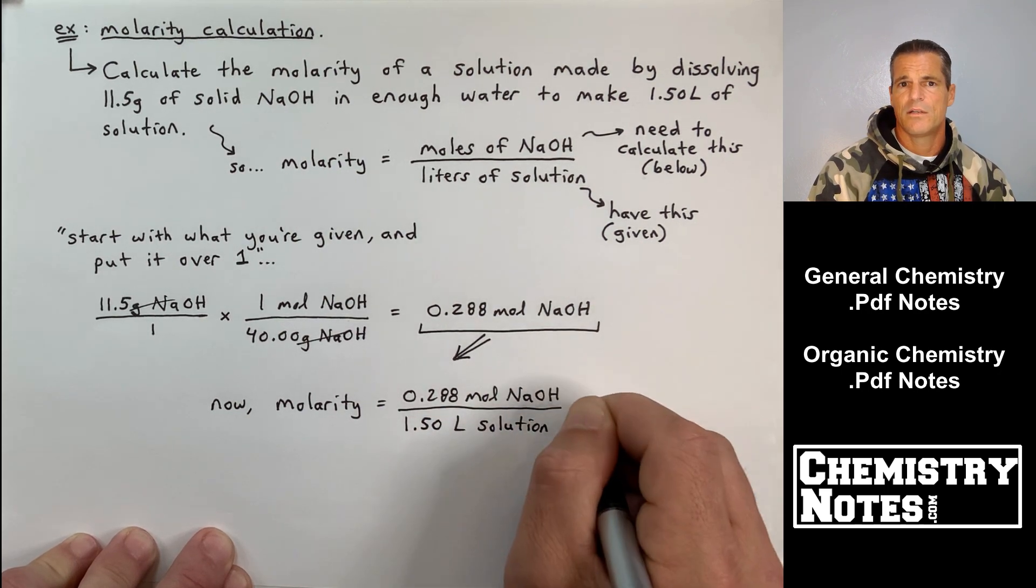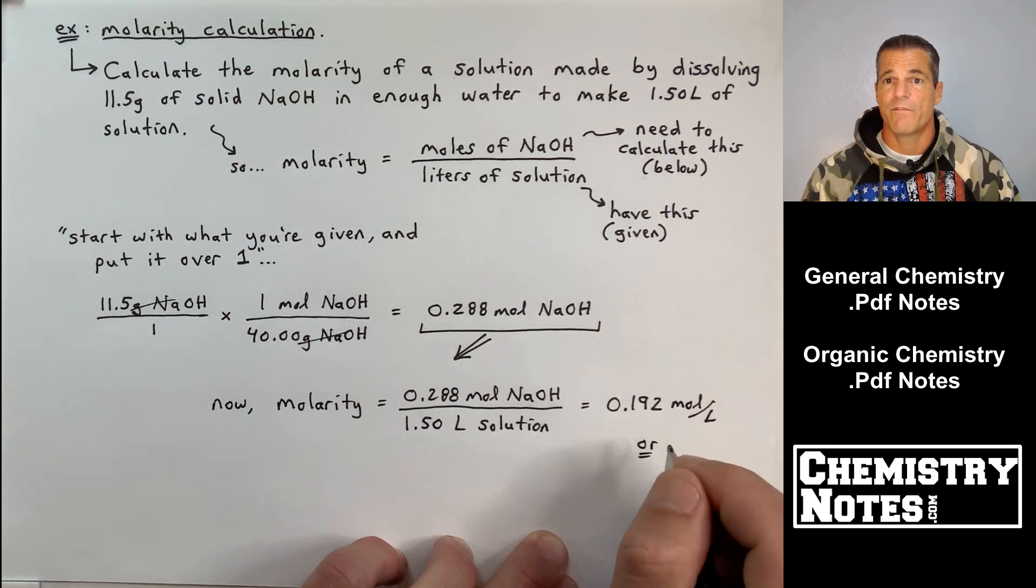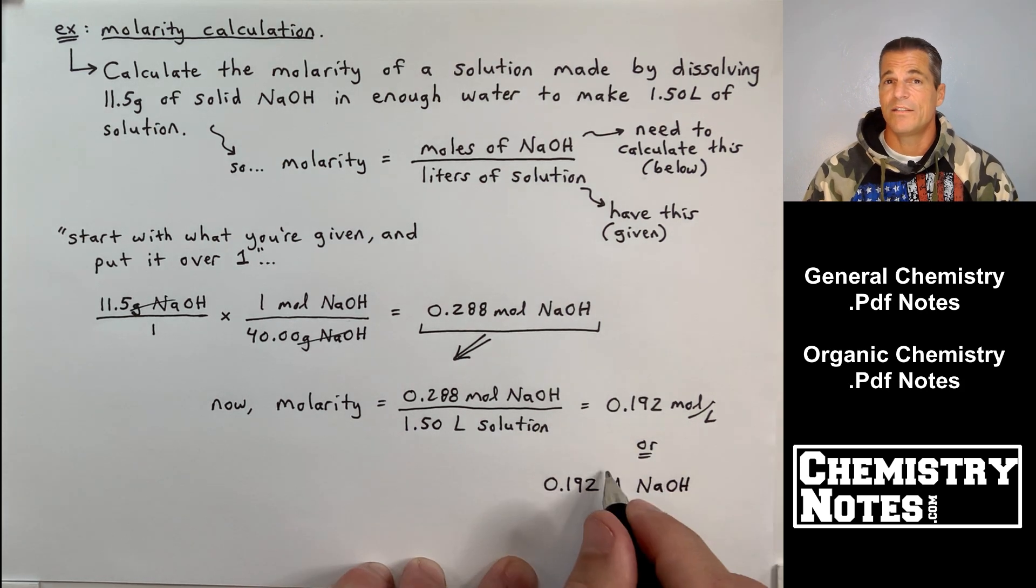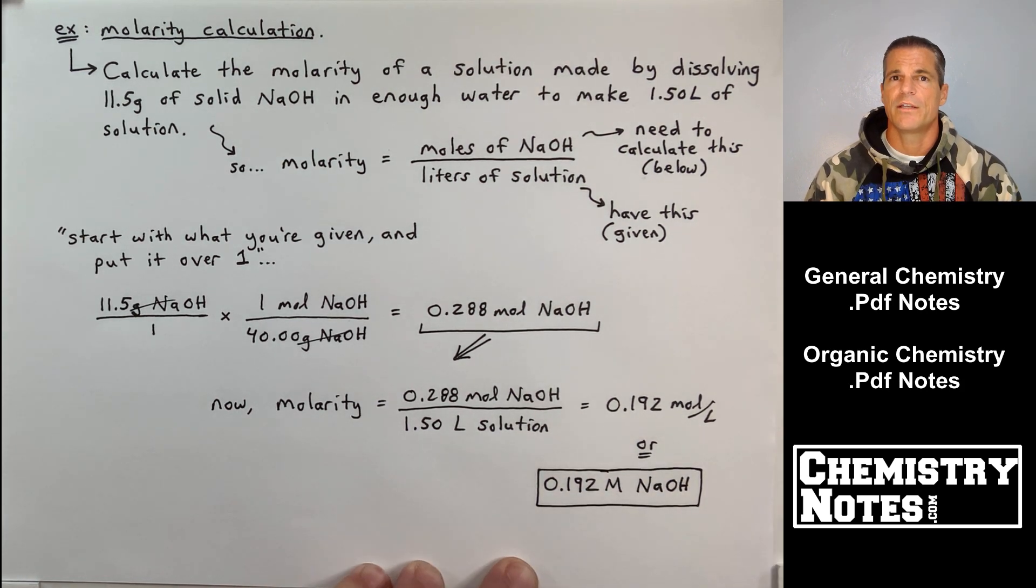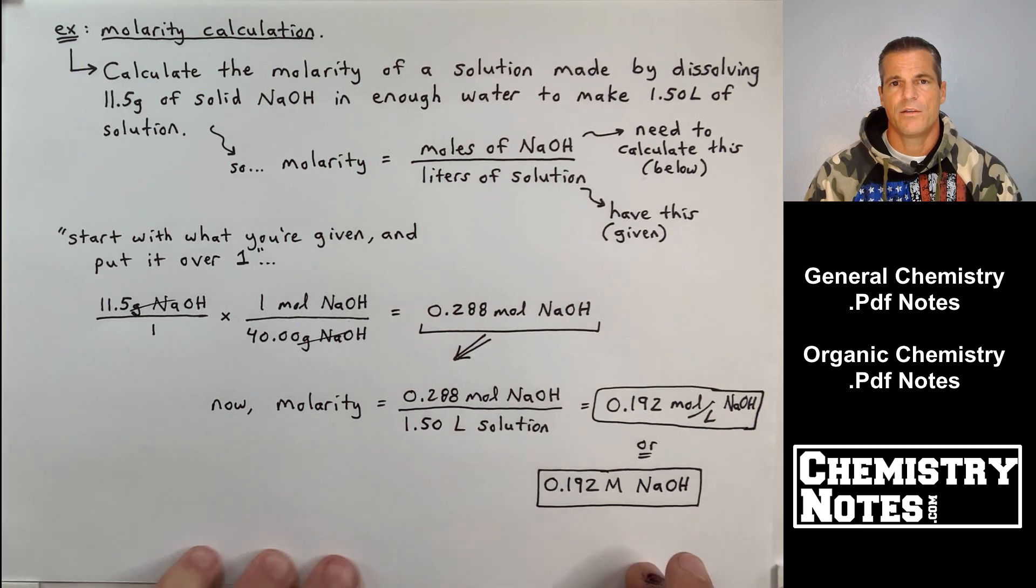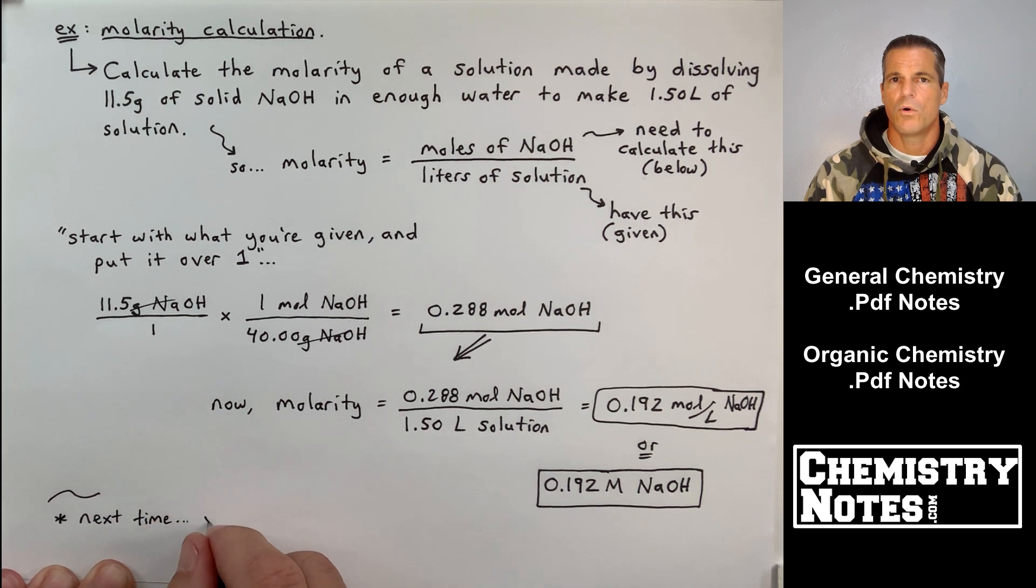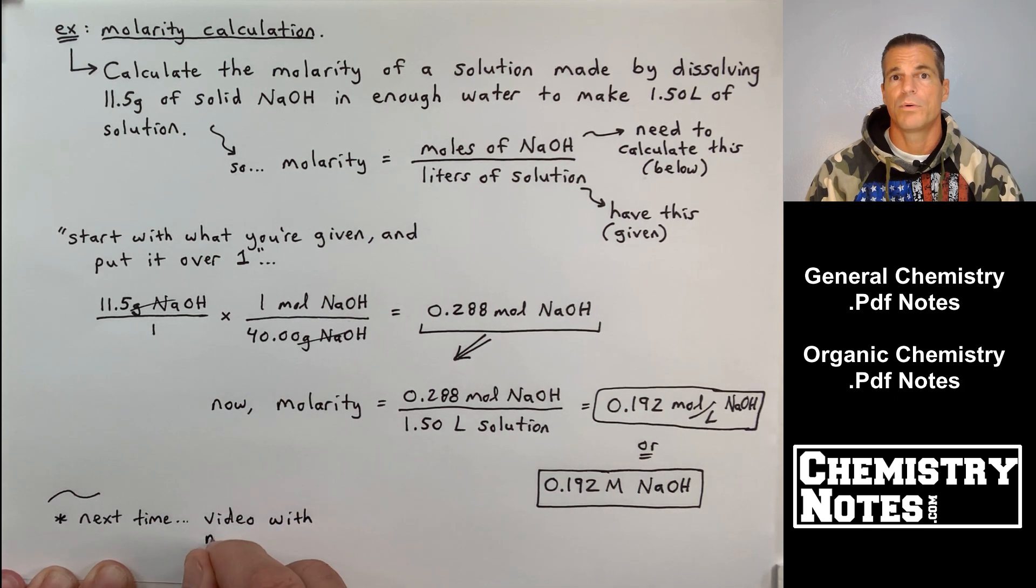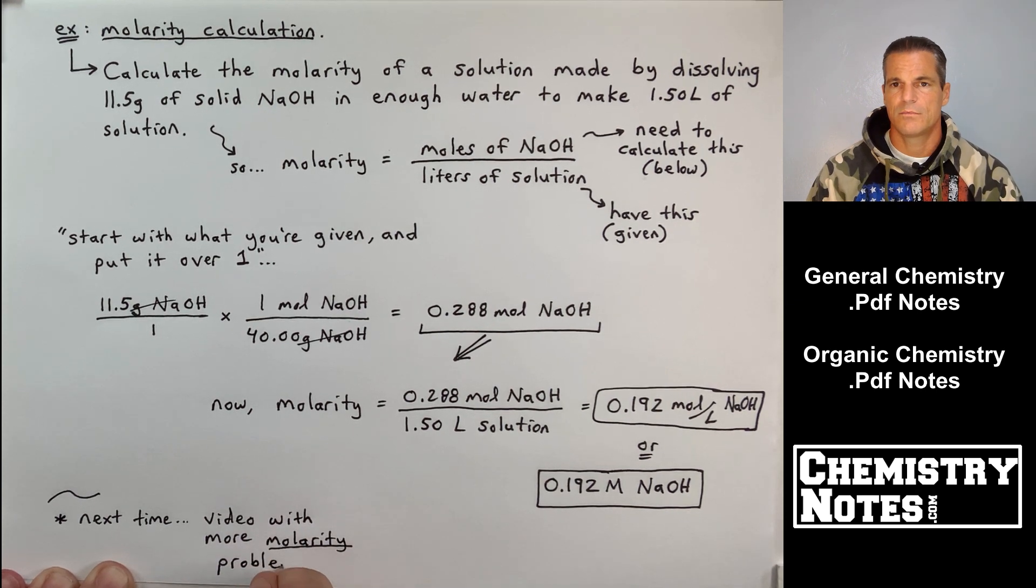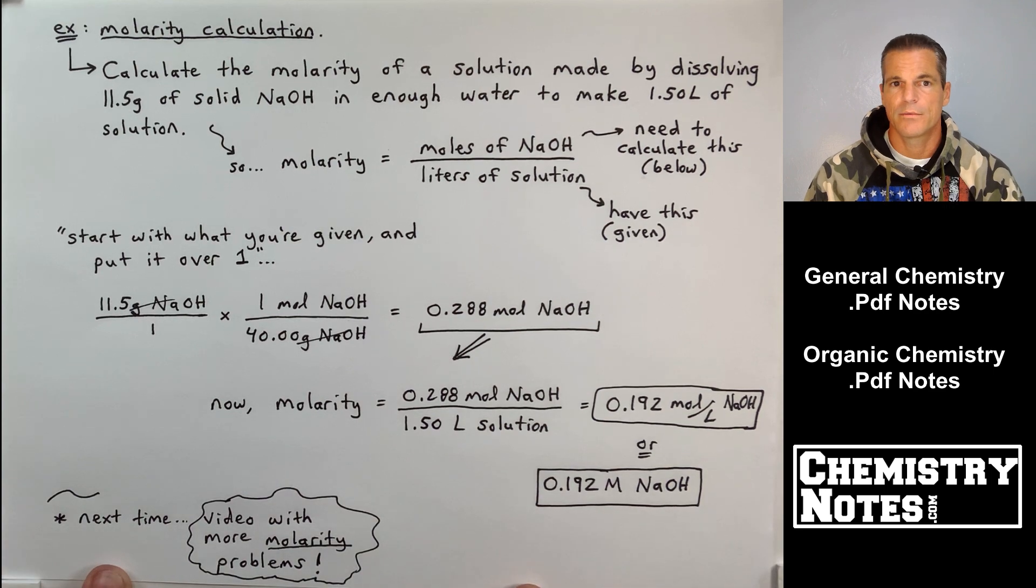So molarity is 0.288 moles of NaOH divided by 1.50 liters of solution, and I end up with 0.192 moles per liter of NaOH, or 0.192 molar of NaOH. You can use big M as the unit, or you can use mole per liter, because 1M, 1 molar, is equal to 1 mole per liter.